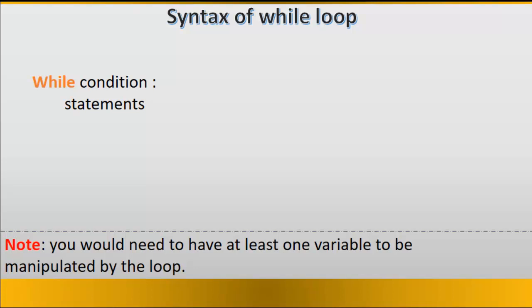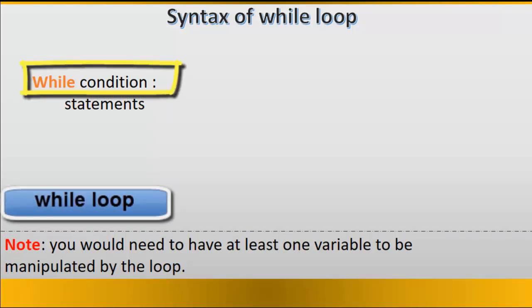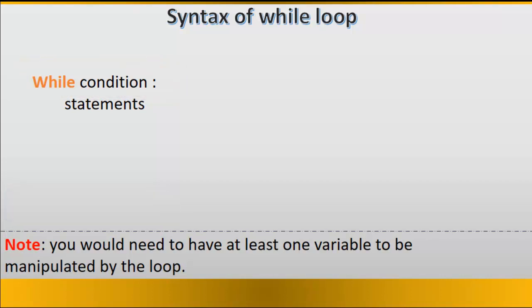The syntax of while loop starts with the word while then a condition to be met and colon. The second coming sentence is indented by four spaces and then you write your statements. You would need to have at least one variable to be manipulated by the loop.